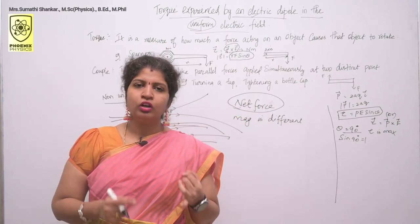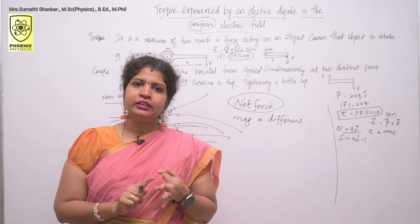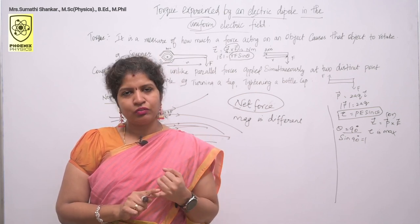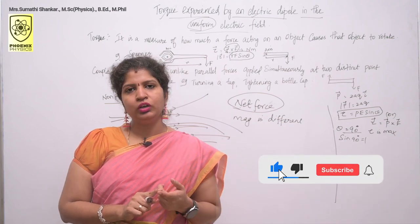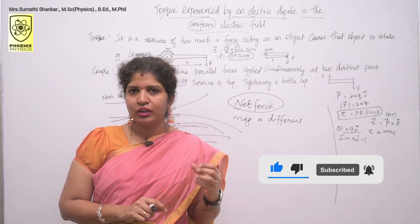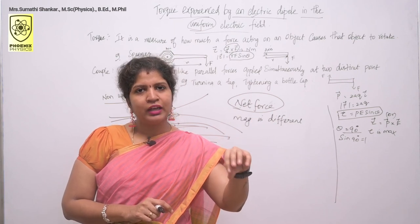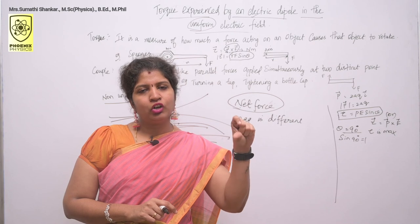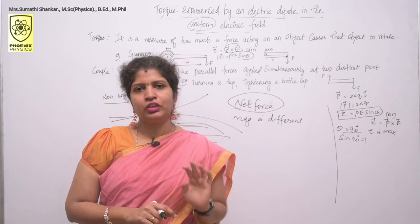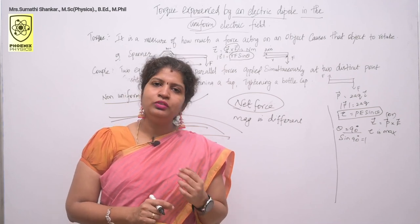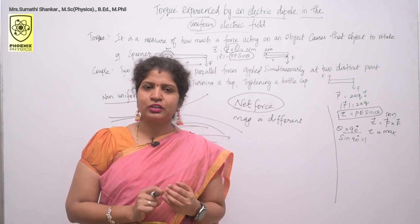In this class we discussed what is torque, what is couple, and what is uniform electric field. We derived the magnitude of the torque formula and discussed the direction of torque based on the right-hand rule. Finally, we discussed that if you place an electric dipole in a non-uniform field there will be a net force, whereas in a uniform electric field the net force is zero. I hope this video is useful to you — please share and subscribe. Thank you.